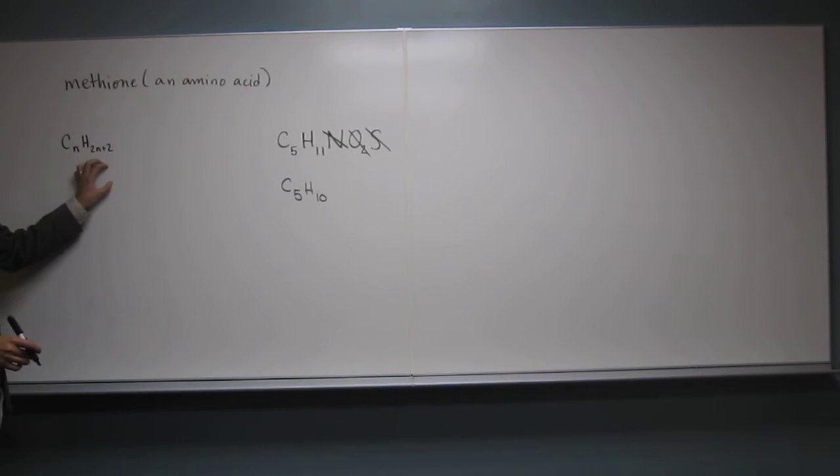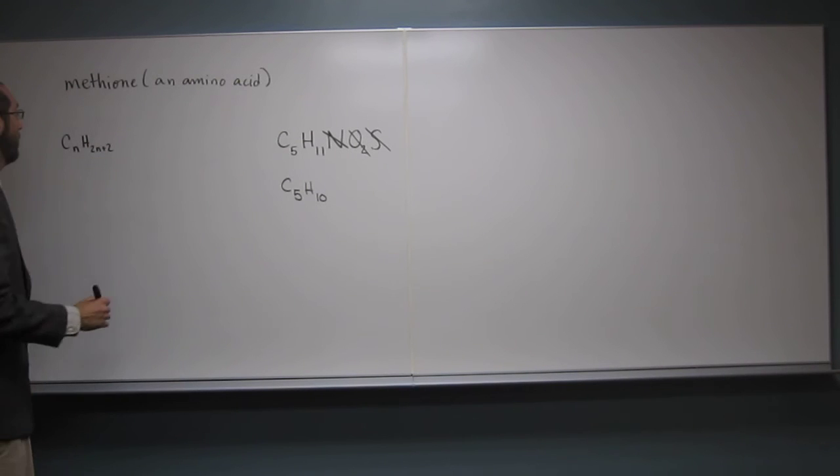C5H10, Cn H2n plus 2, right? So if that's the case, it should be C5H what? 2 times 5, oh, 10 plus 2, so 12, right? OK, so 12.